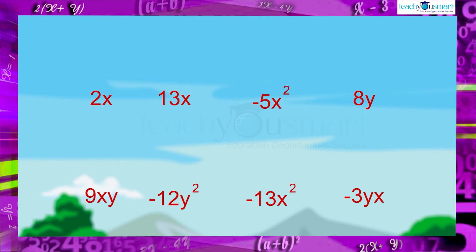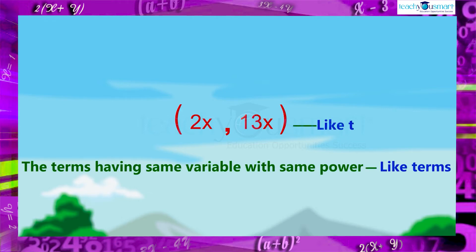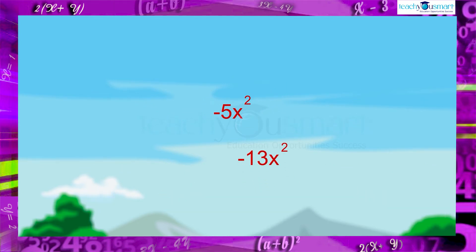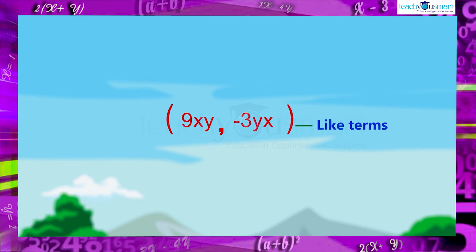So by grouping these terms, 2x and 13x are the terms having the same variable with the same power. These terms are called like terms. Like that, minus 5x square and minus 13x square, and 9xy and minus 3yx are also like terms.